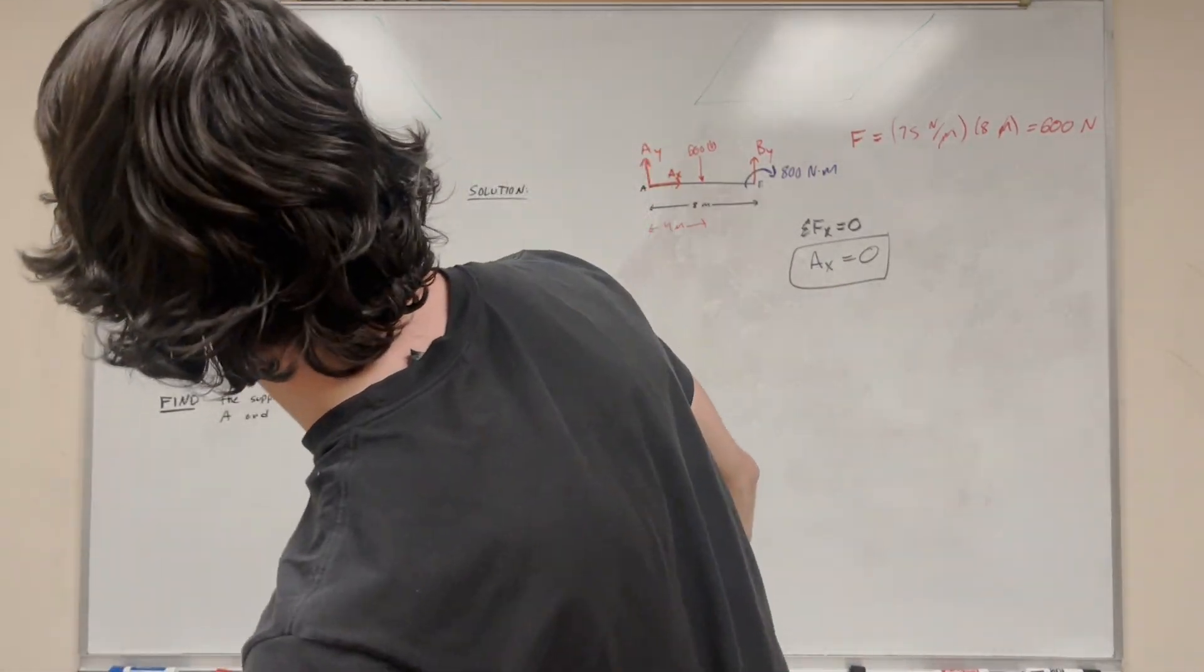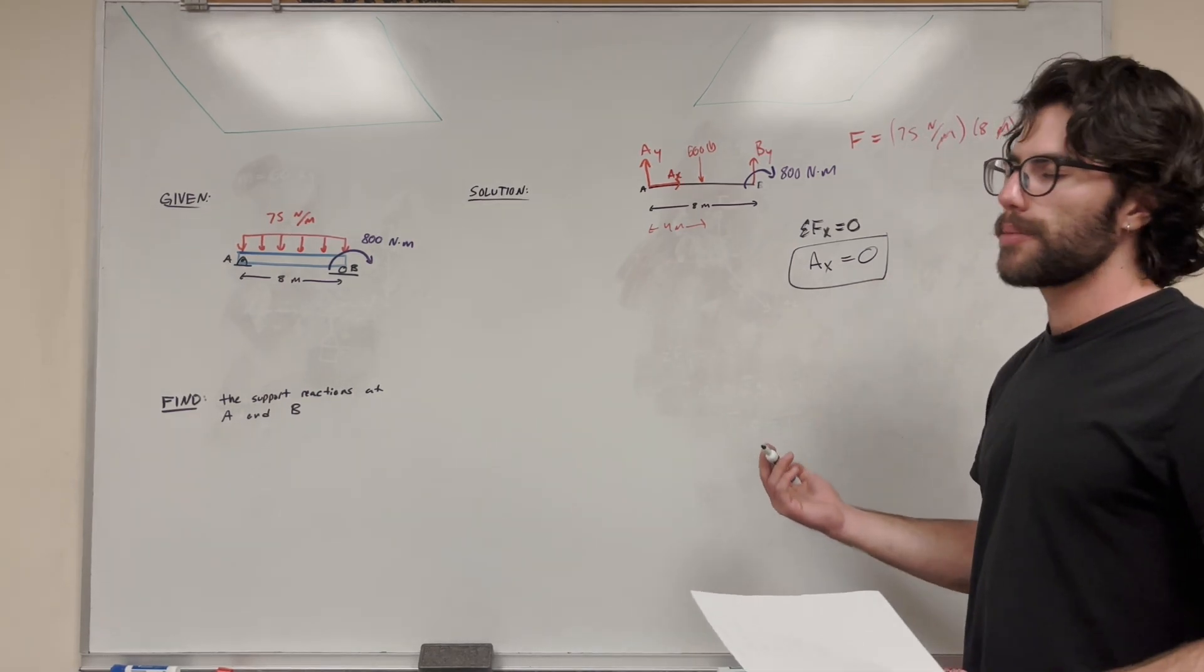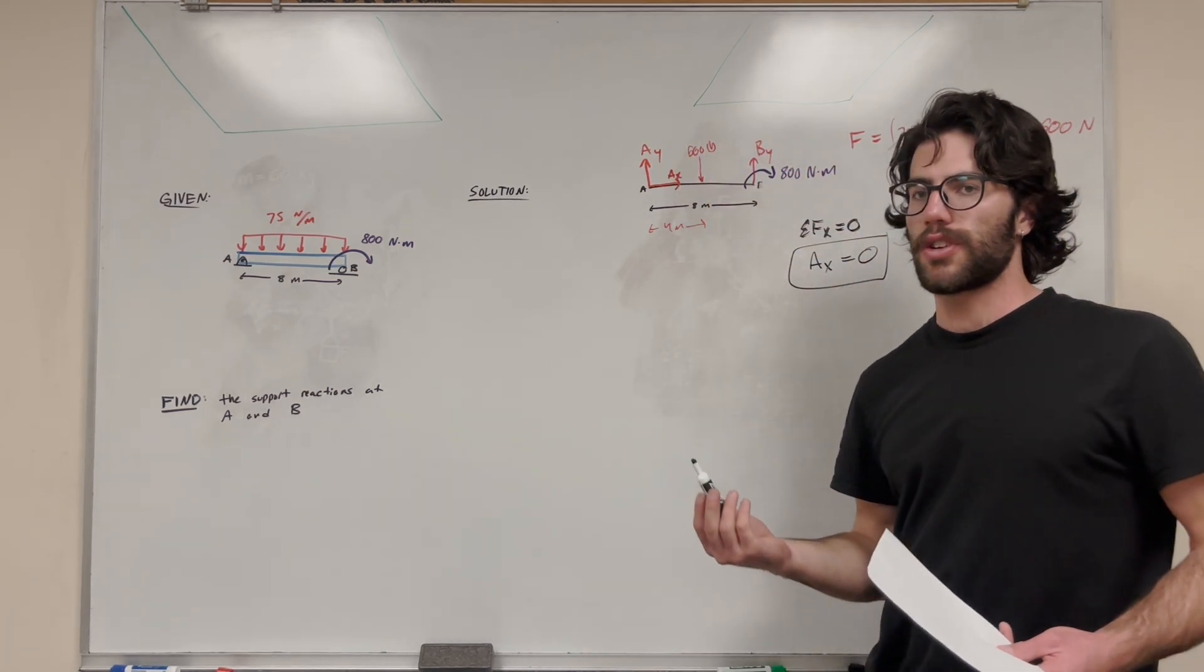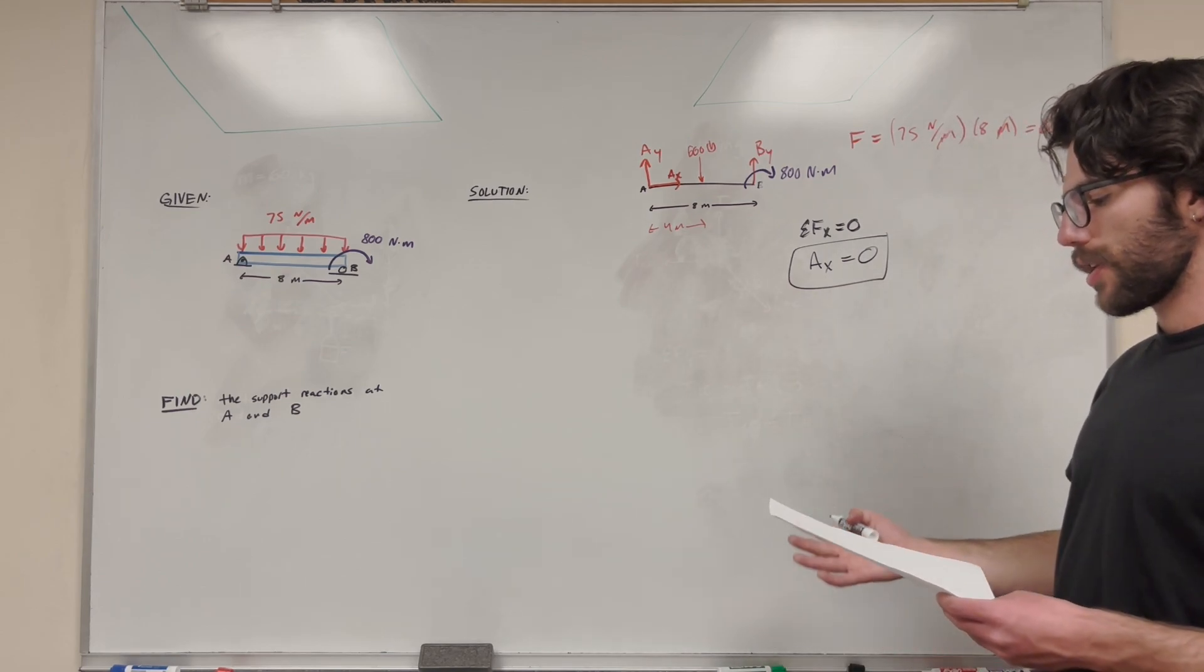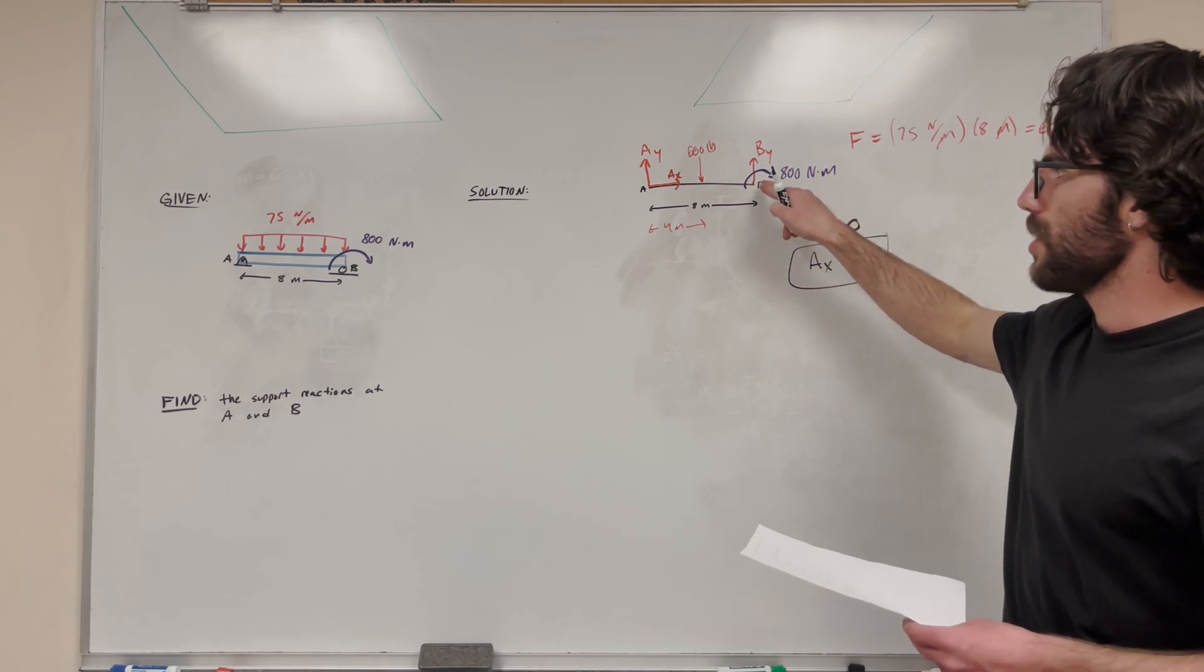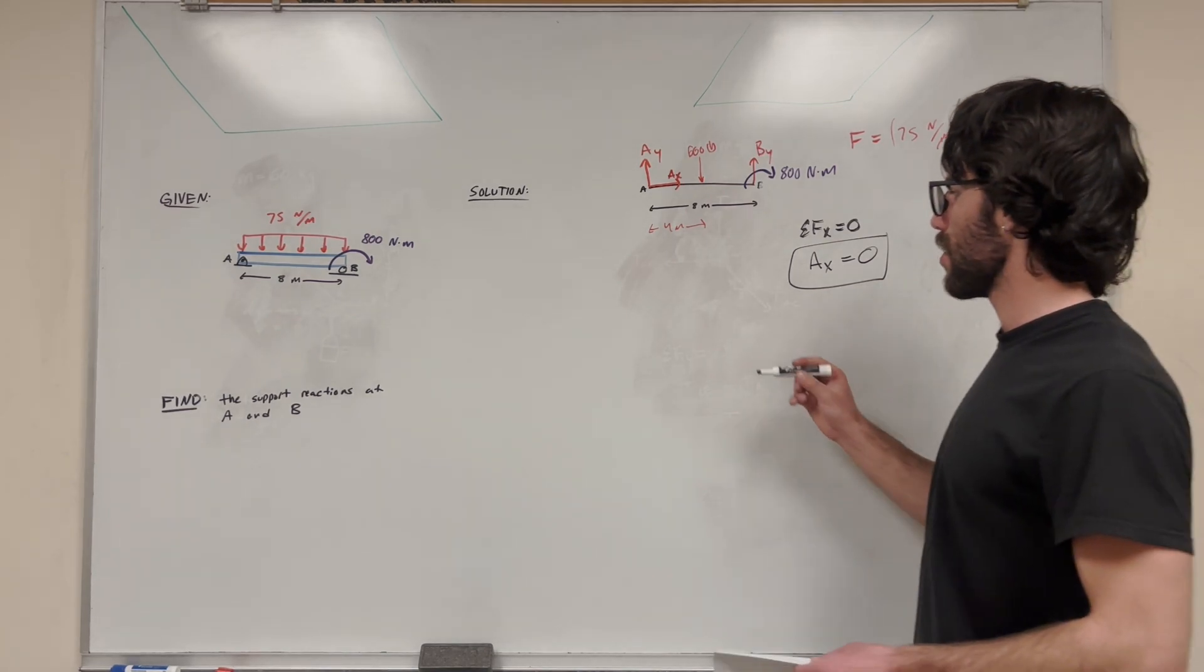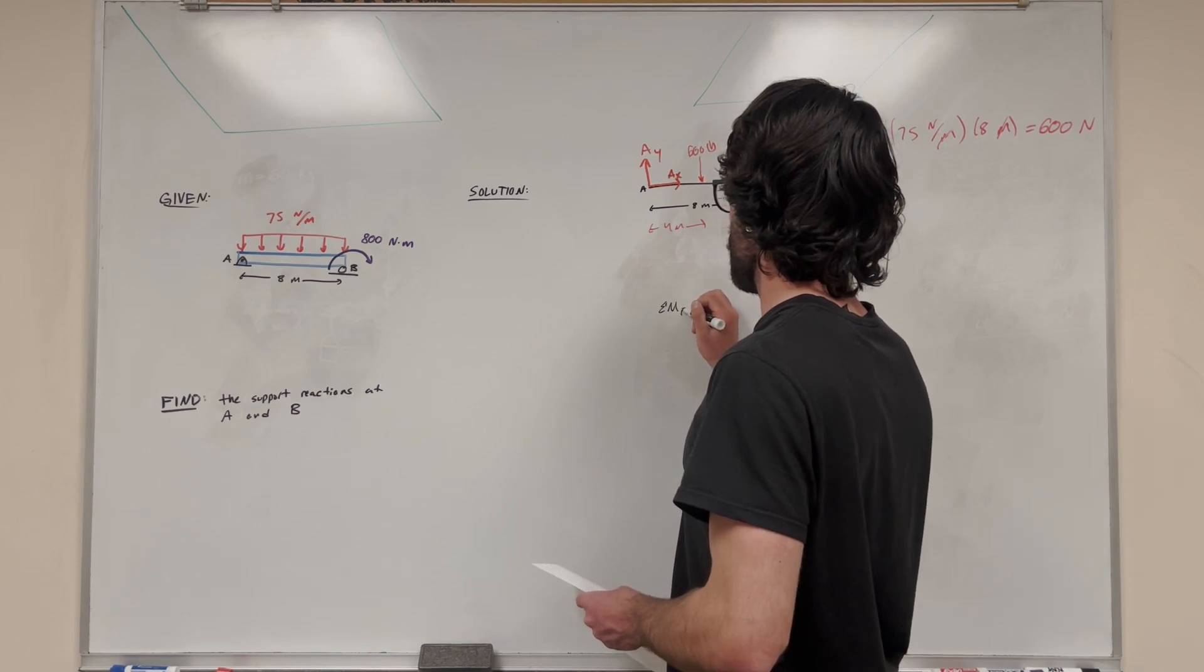So let's do our next one. Let's do sum of the forces. Okay, here's what's going to happen. If we do sum of the forces in the Y direction, we're going to have two unknowns, right? We have A_y and B_y, both forces acting in the Y direction and both unknown. So we're not going to be able to solve it that way. So instead, we're going to need to do a moment. So let's take sum of the moments at B. Now you could do sum of the moments at A. Maybe you should try that and see if that gives you the same answer. But I'm going to do sum of the moments at B because I think it'll be the easiest way to solve this.